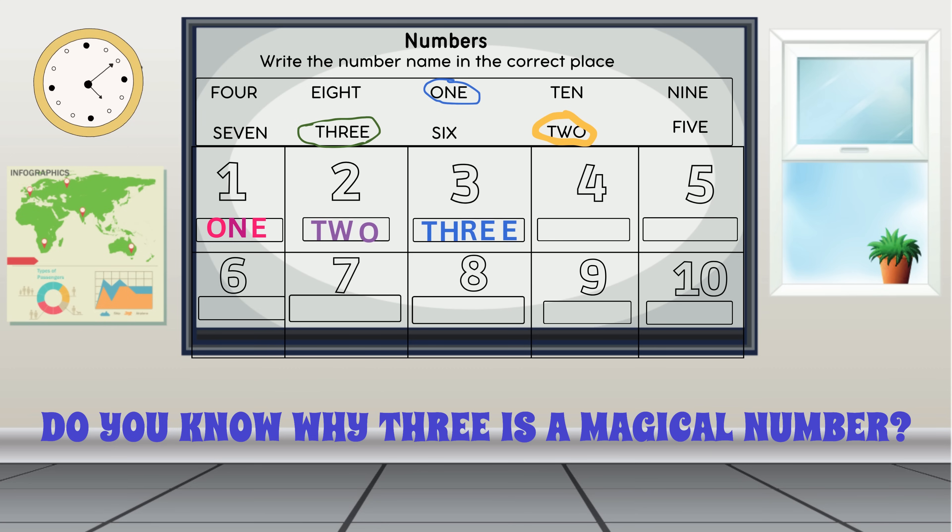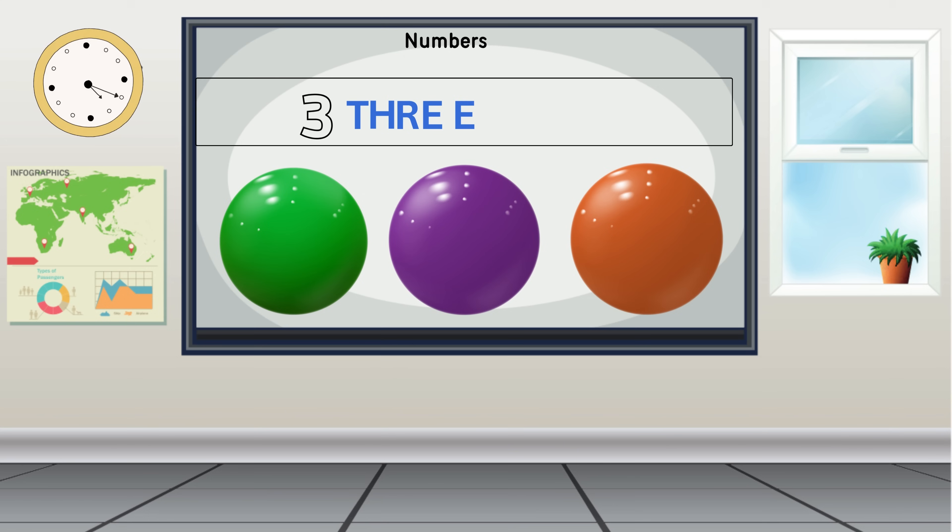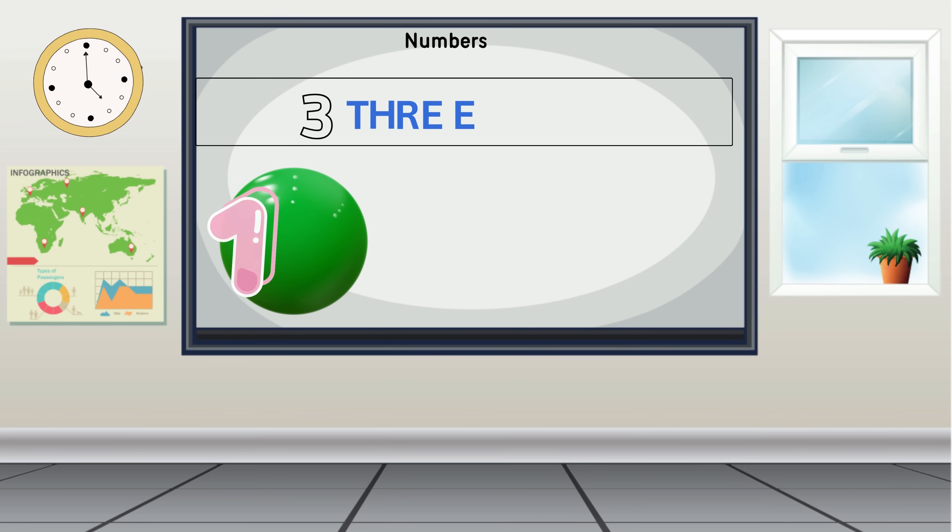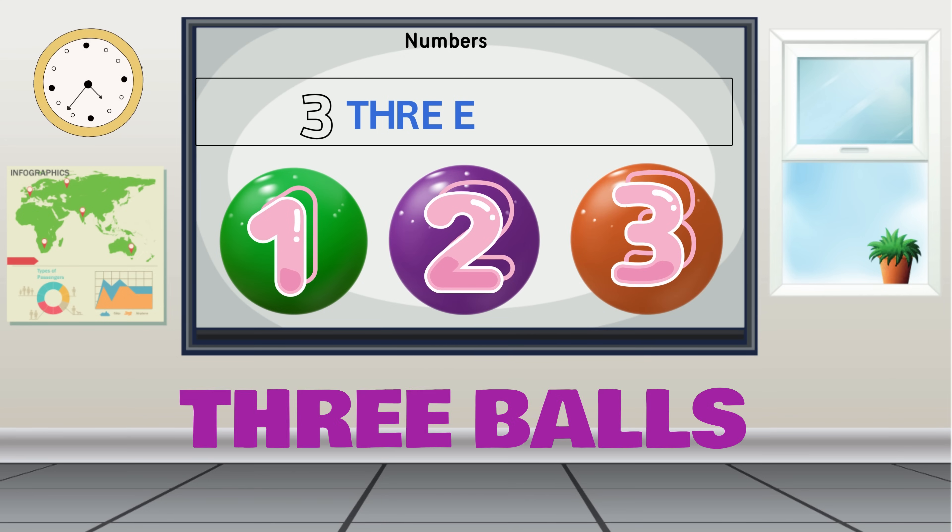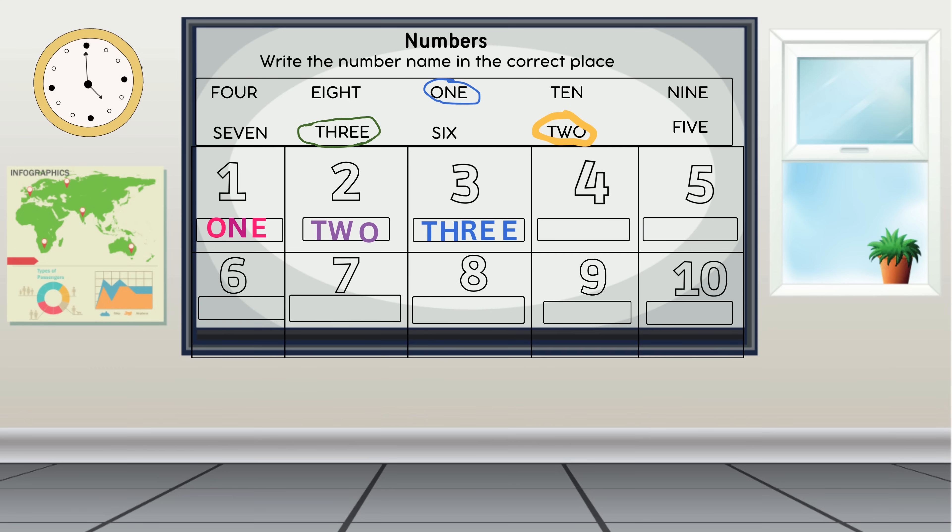Do you know why three is a magical number? Three is one more than two. Let's count the number of balls together: one, two, three. Three balls, well done. Now you know the name for three, on to the next number four.